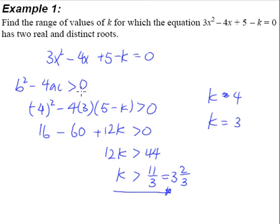So for your b squared minus 4ac to be greater than 0, your k has to be greater than 3 and 2 thirds, which means that it has to be 4 or 5 or 4 and a half and so on. So this is what it means. It is rather important that when you get the answer, you understand what the answer is trying to tell you, what the answer is all about.